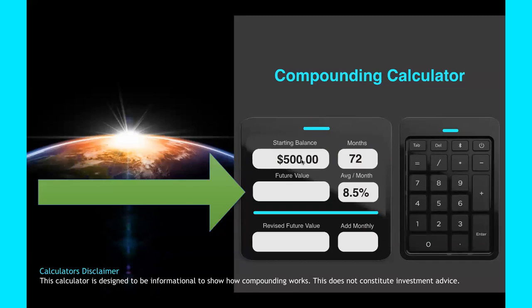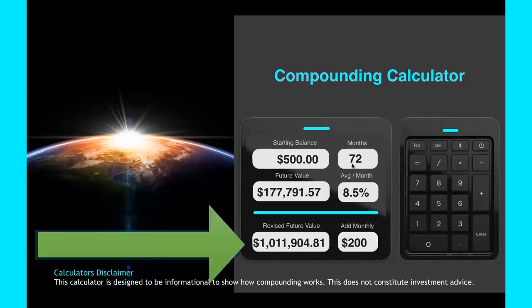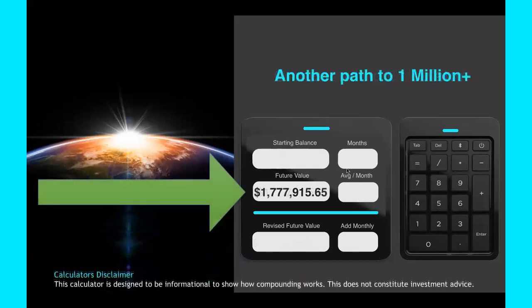Let's look at this. The $500 balance at 72 months. Actually, this is the same one I just showed you. What I want to get at is, how do you get $5,000 starting balance to $1,777,915? 72 months. Same percentage. 8.5% compounded.